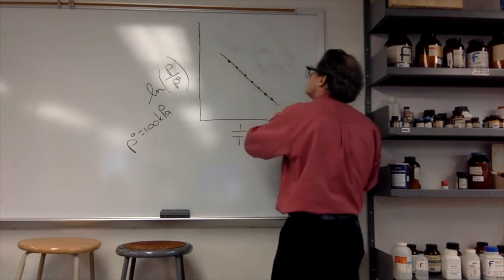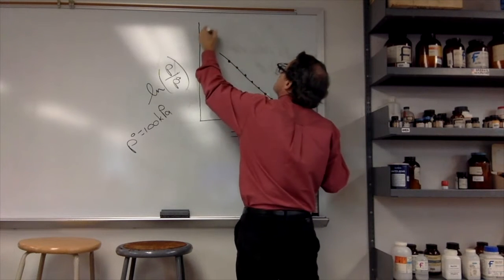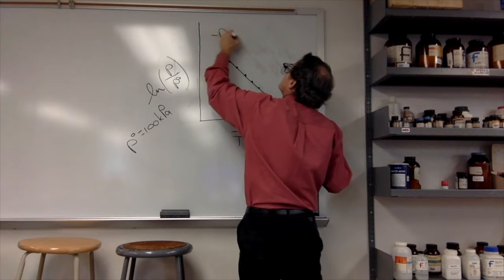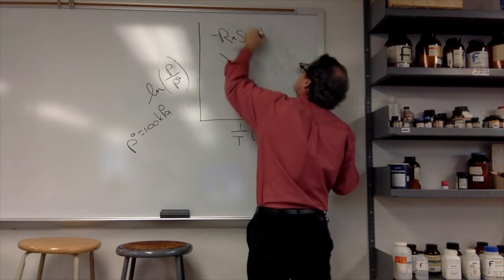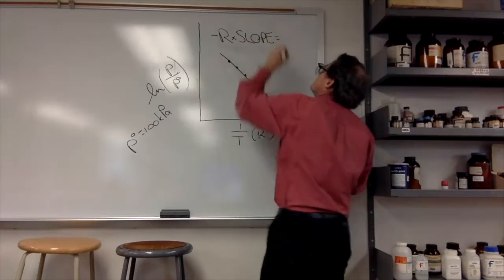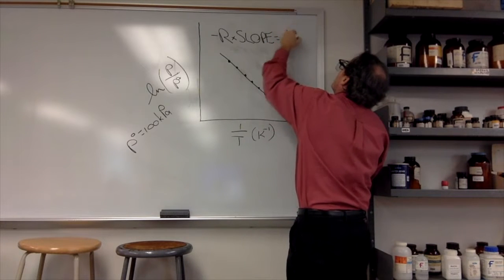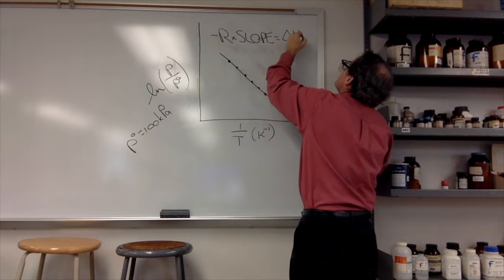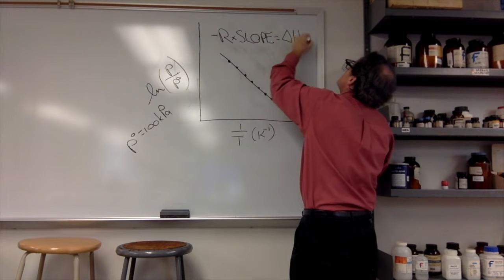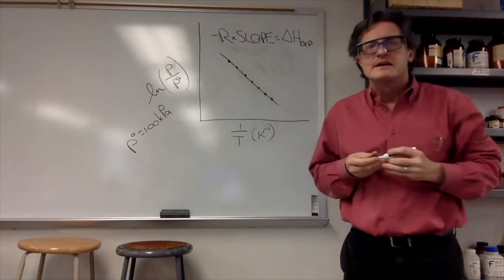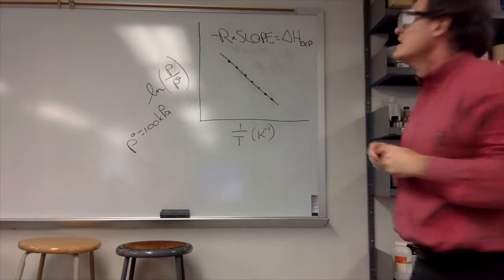Fit that to a line, and what we know is that minus R times the slope is equal to ΔH. We're going to call that our experimental value of ΔH.